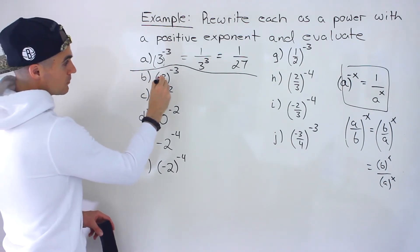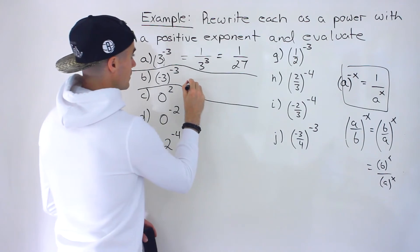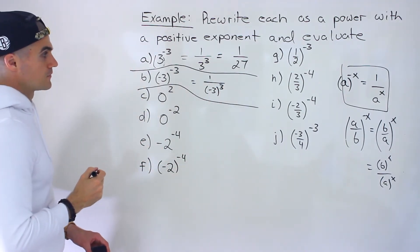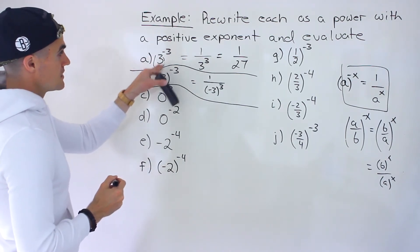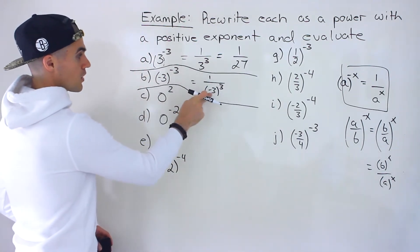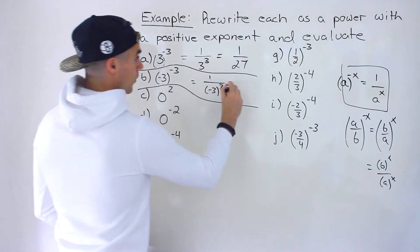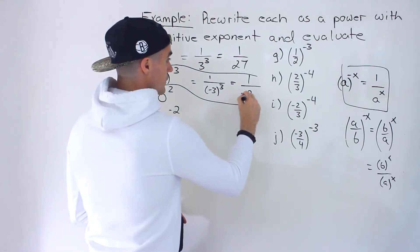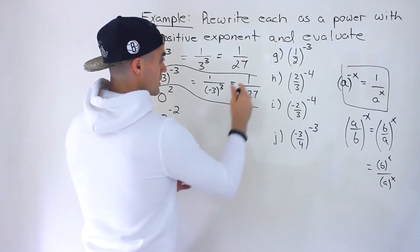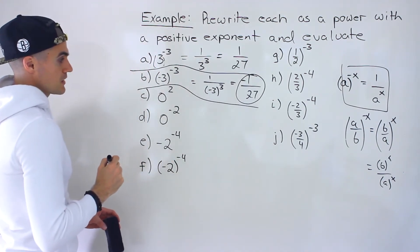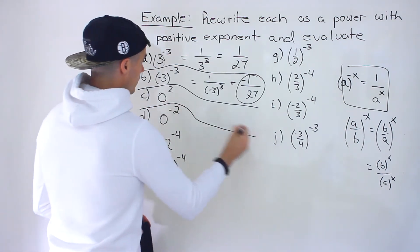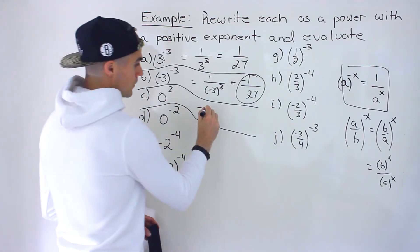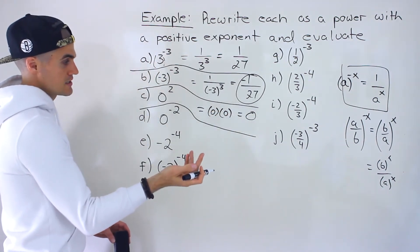Part b: negative 3 in brackets to the power of negative 3. The same rule applies — we get 1 over negative 3 to the power of positive 3. Negative 3 times negative 3 is positive 9, times negative 3 gives negative 27, so the answer is negative 1 over 27. Then for part c, we have 0 to the power of positive 2, which already has a positive exponent. Zero to the power of 2 is 0 times 0, which is just 0.